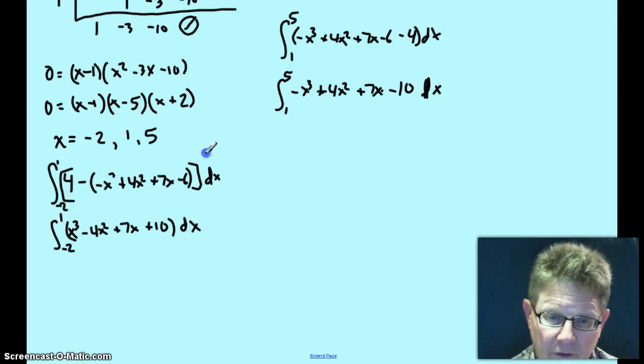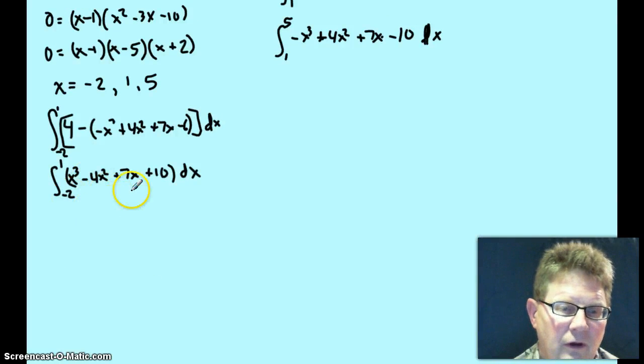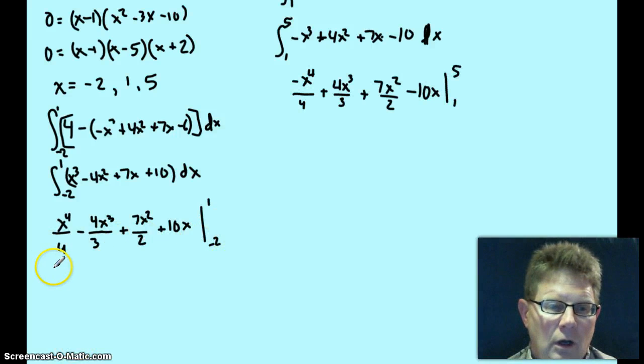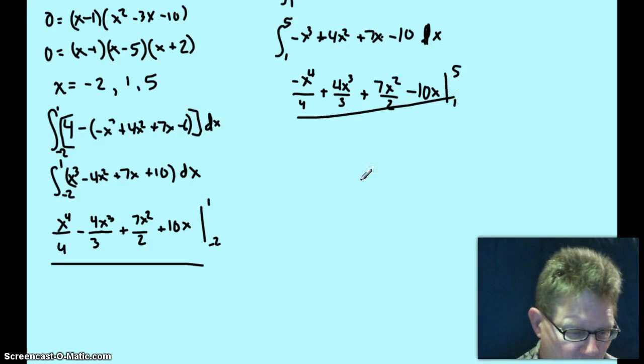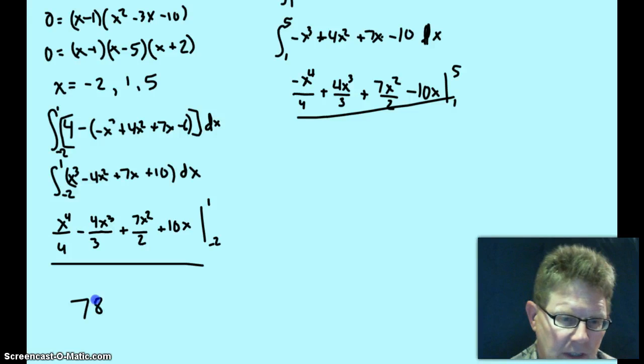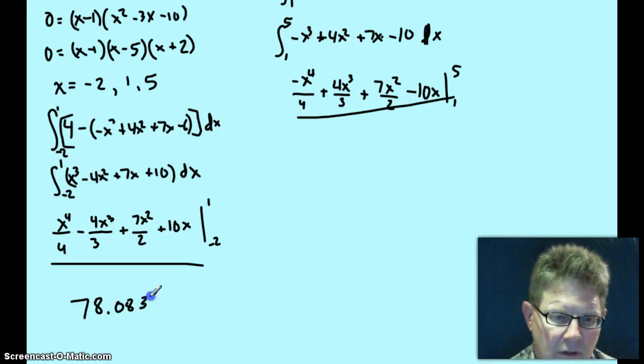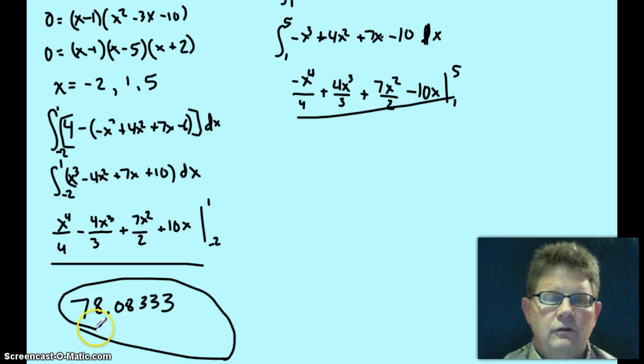Then, you would just do both integrals, evaluate, and find a sum. So, I'm going to let you find the integral of both of these, and then you can check before you evaluate. Those are my two antiderivatives here. And then I need to evaluate those. And when I do, final answer, 78.08333. And that is the final answer. This does conclude Definite Integrals Part 1, Area Between the Curves.